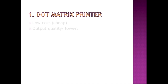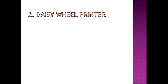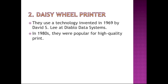First, dot matrix printers — these are the cheapest and produce the lowest quality output. Then daisy wheel printers: they use a technology invented in 1969 by Davis Lee at Diablo Data Systems. In the 1980s they were popular for high quality printouts.